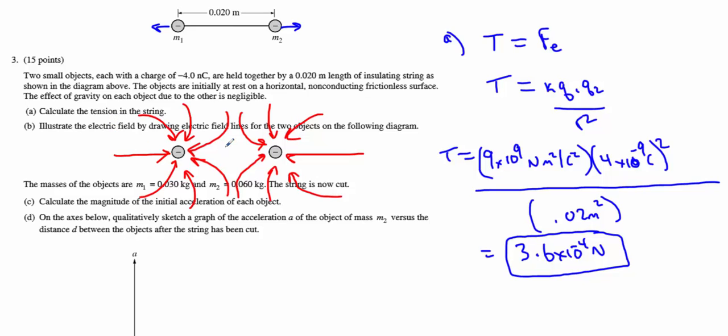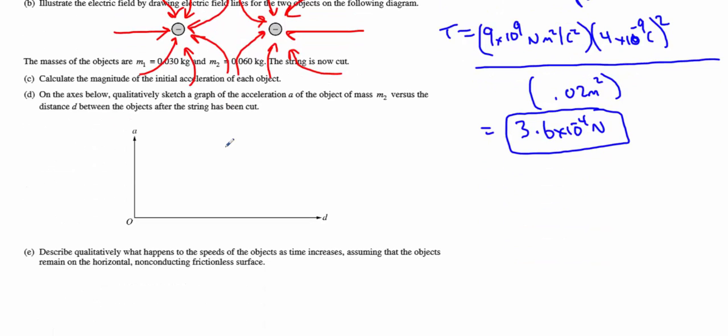Now we are given the masses of the two particles and we're going to cut the string. We want to know the initial acceleration of each object. This is more or less Newton's laws in general. We have two things we've got to recognize here. They're both going to experience the equal 3.6 times 10 to the negative 4 Newton force outward. So they're both going to experience the same force. We also have to recognize that relationship between F equaling MA.